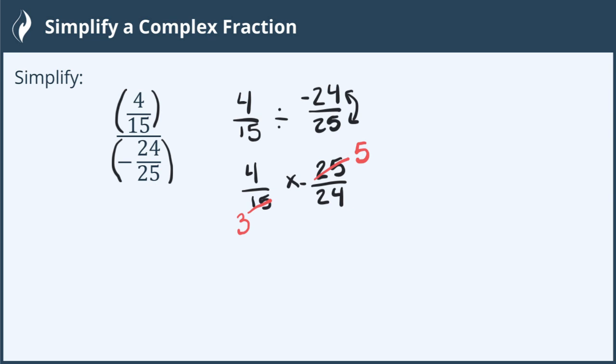I also see that numerator 4 and 24 are both divisible by 4. So 4 divided by 4 is 1. 24 divided by 4 is 6.